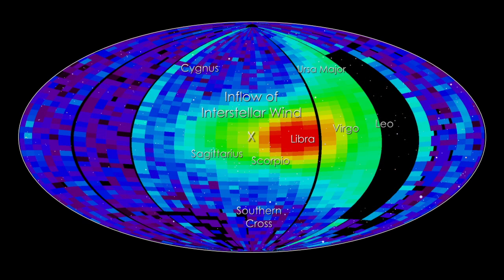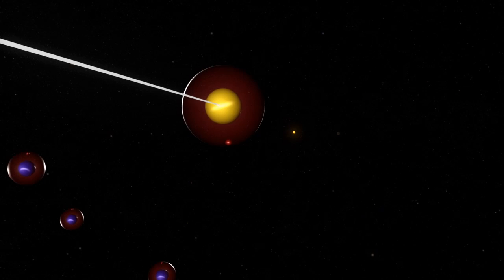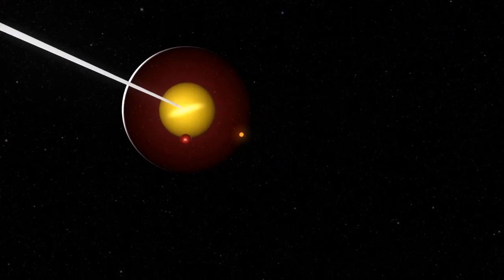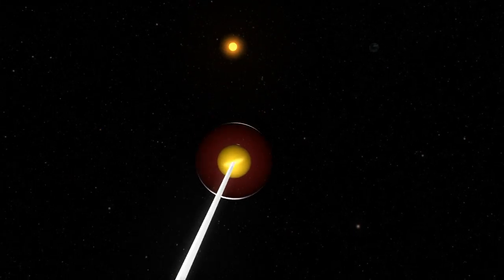Many instruments have seen the characteristic spectra of elements outside the solar system, but IBEX is actually detecting atoms from interstellar space that punch through the heliopause and strike the spacecraft.